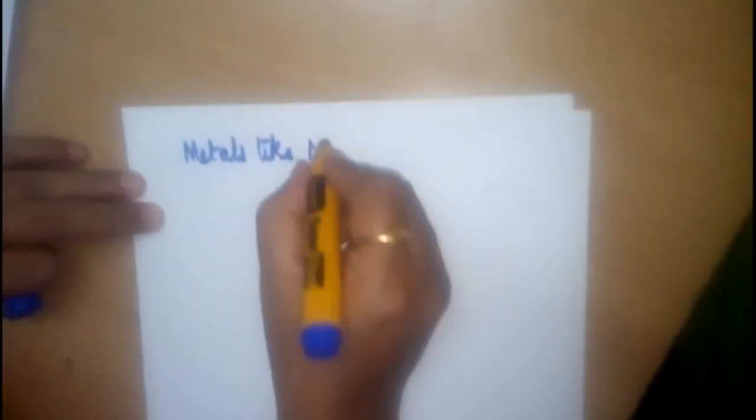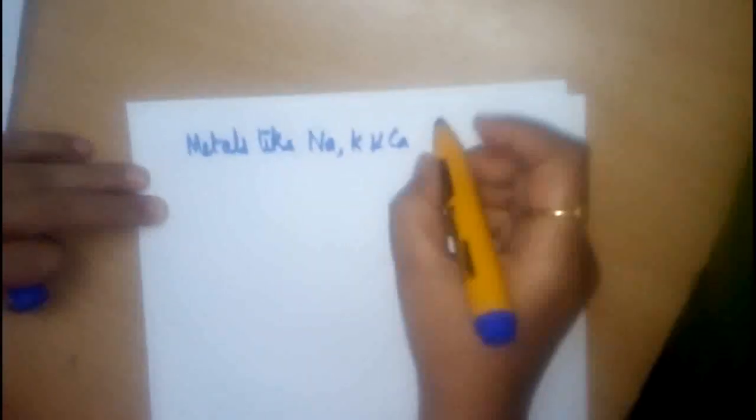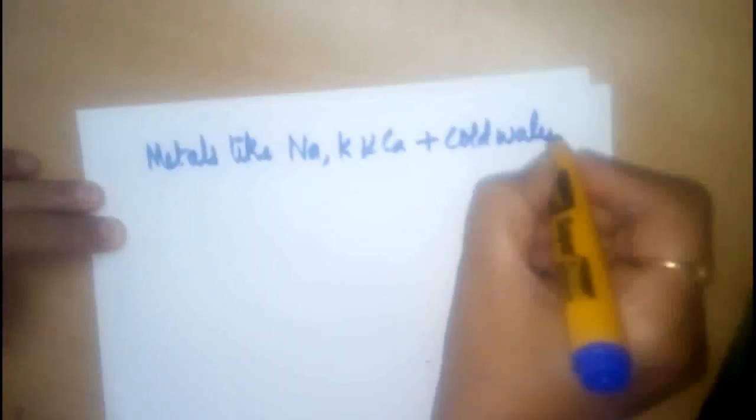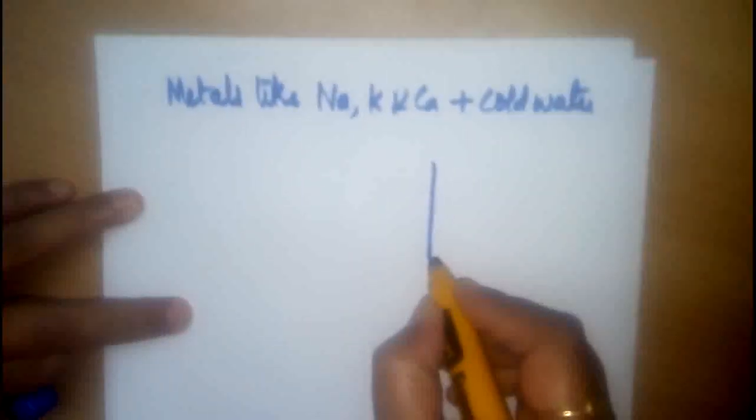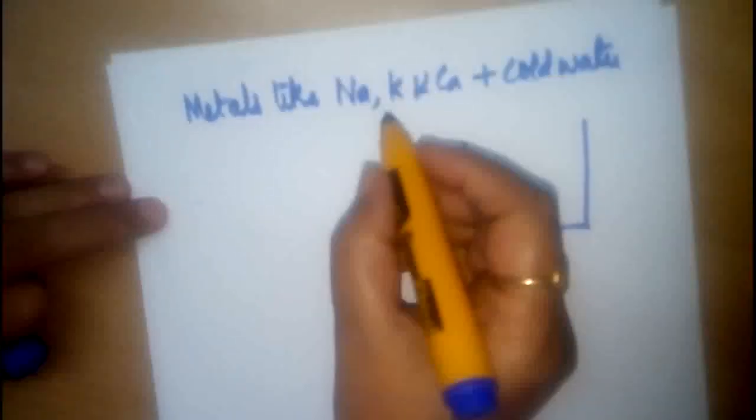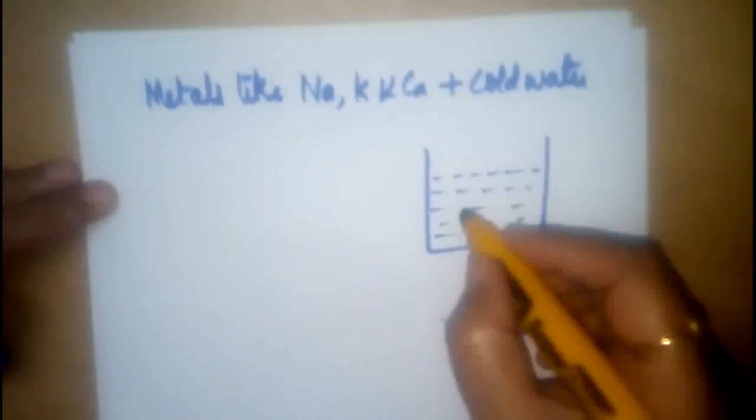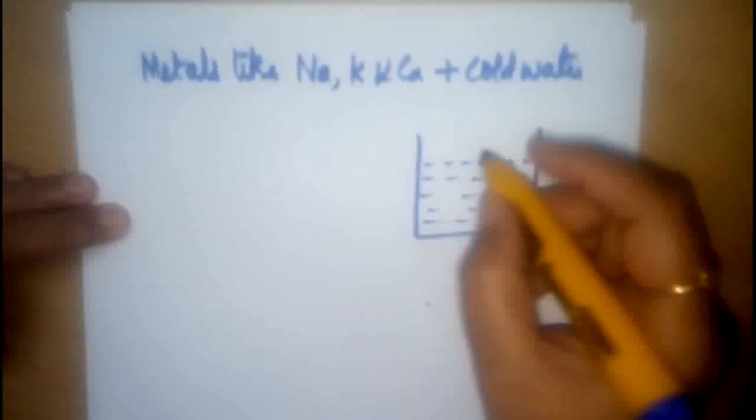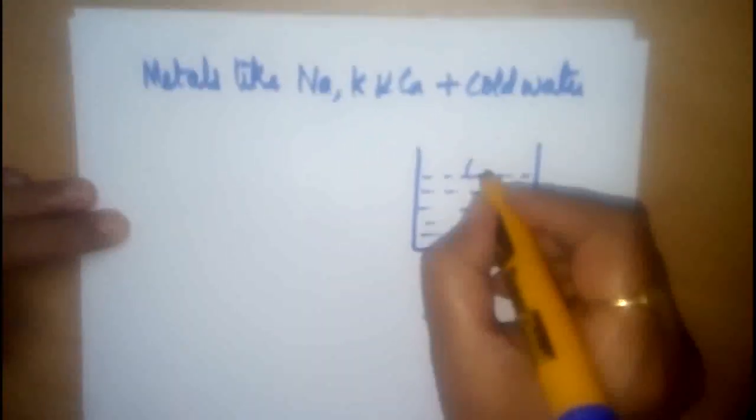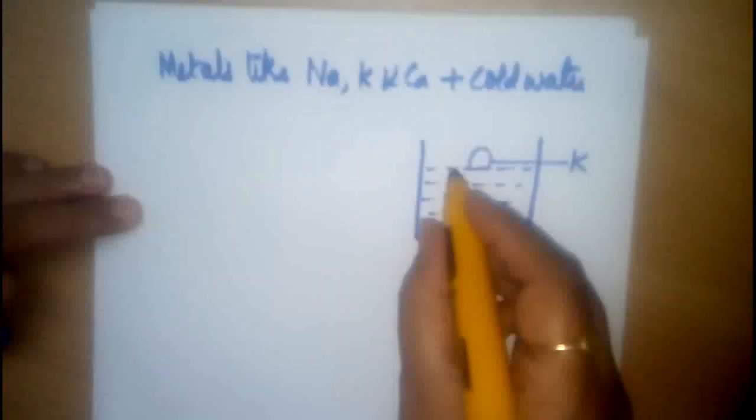Let us take up the first method by the action of water on metals. All metals do not react with cold water. Few metals like sodium, potassium and calcium react with cold water. The reaction if we conduct is something like this. Let us take up the first metal to be potassium. A beaker containing water is taken and when potassium piece, the metal piece, potassium is dropped.